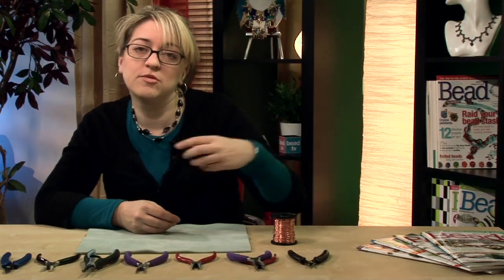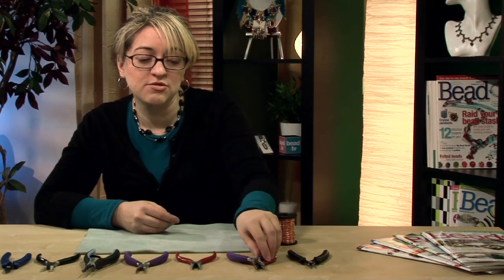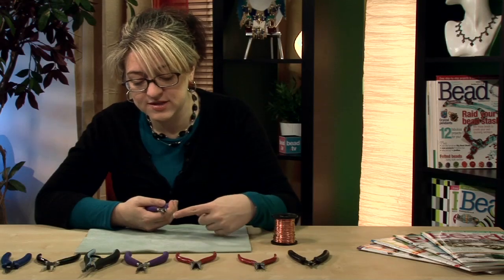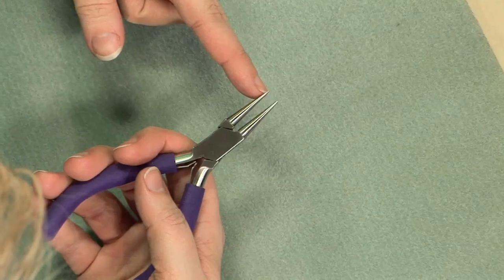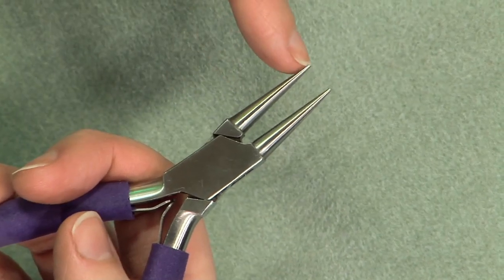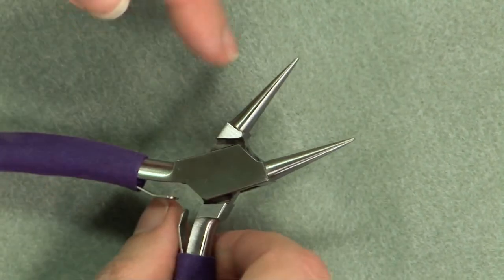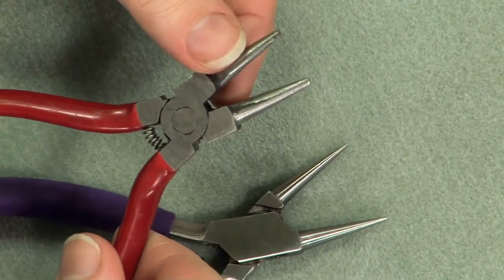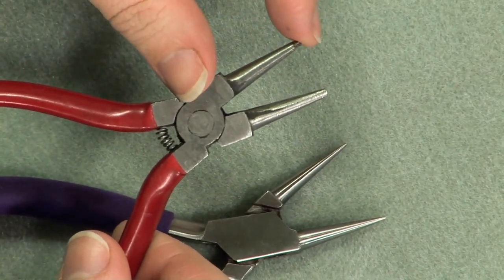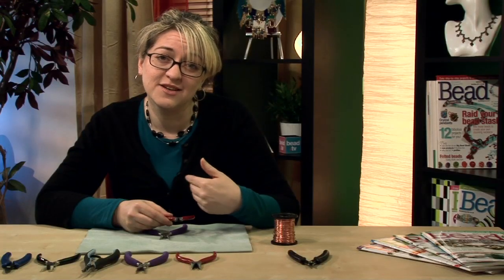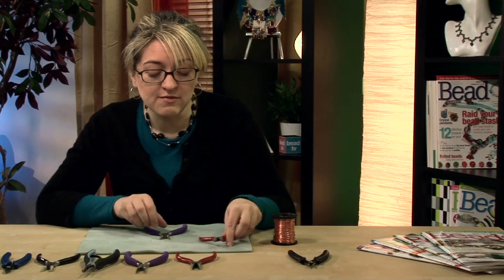The next pliers are what's called round nose pliers. These are called that because their jaws and their noses are round, they're rounded all the way and you can see they go from pointed or a lot smaller up to a larger size so they taper down towards the point. They do come in different sizes, these ones go down to quite a fine point, these ones here they're a lot bigger and they don't go quite as far down and you'll also find ones are a lot finer. When you start doing wire work you might want to invest in a few different pairs just depending on the size loops you want to make.